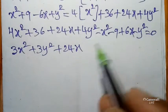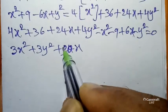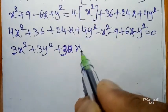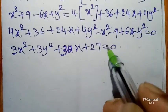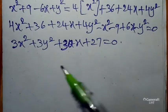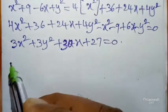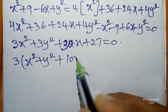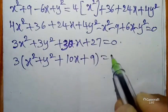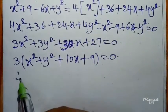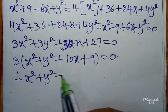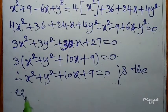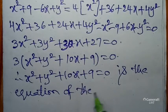So we have 3x² + 3y² + 30x + 27 = 0. Taking 3 as common factor, we get x² + y² + 10x + 9 = 0. This is the required equation of the locus.